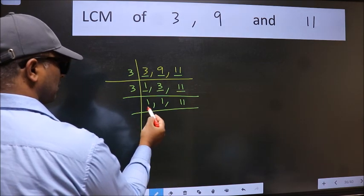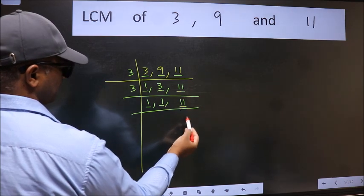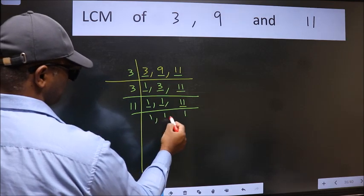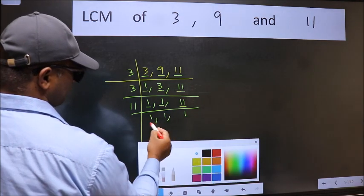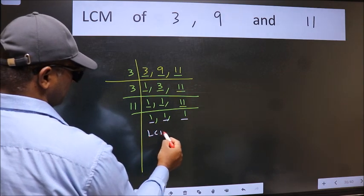Now we got 1 here and here, so focus on the next number 11. 11 is a prime number, so 11 divides 11. So we got 1 in all the 3 places. So our LCM is,